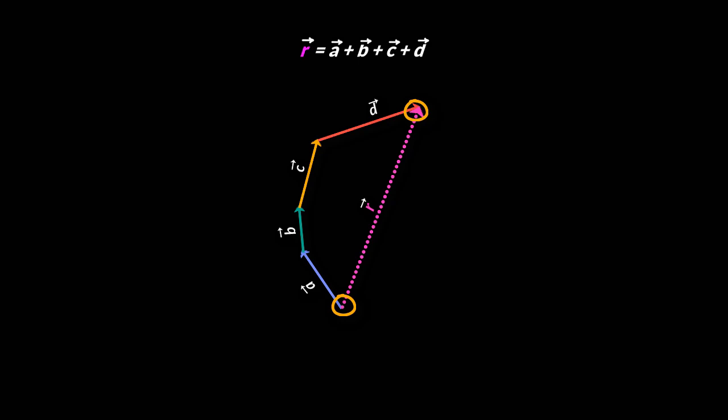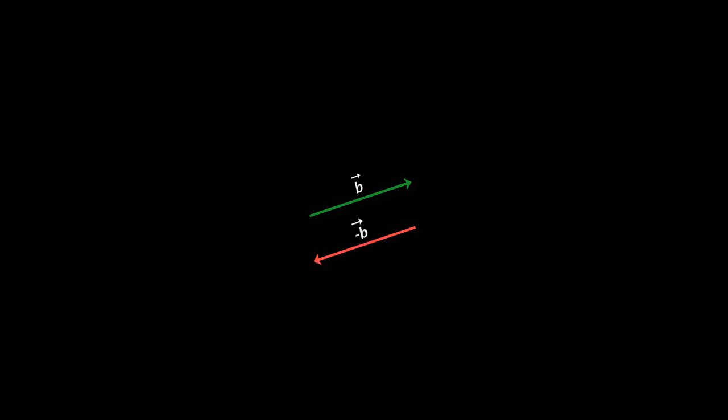The fourth property is that if you have vector B, then minus of vector B would be this. That is the same magnitude but opposite direction. So if you add these two vectors, the resultant will be zero.